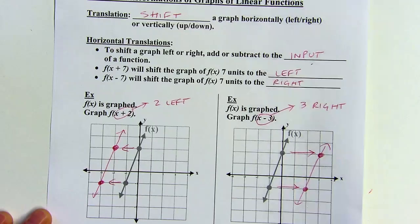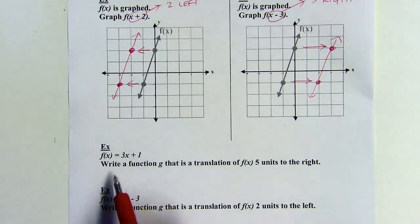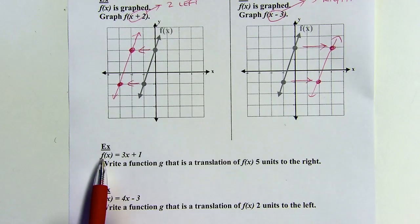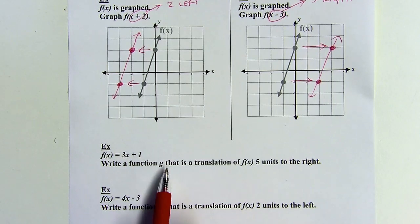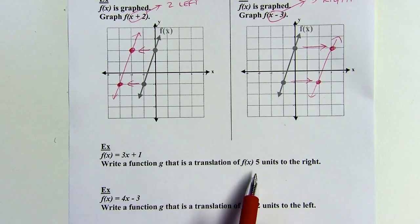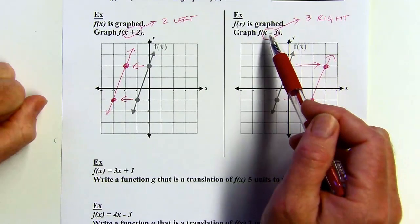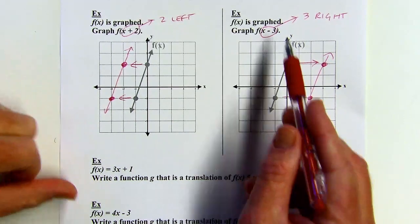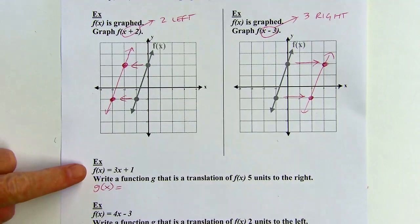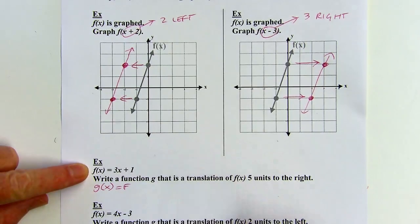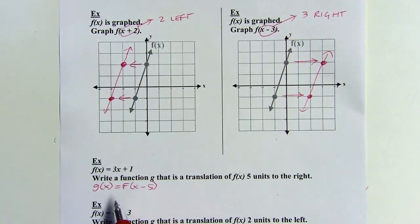Now let's look at writing some functions without the graph — just looking at the equation part. This says write a function g that is a translation of f of x five units to the right. Looking at the example above, when we went right we had f of x minus 3. So when I'm subtracting, that moves things to the right. My new function g is going to be f of x minus 5, since we're moving five units to the right. So that's what g of x is going to equal.